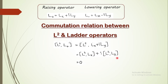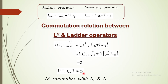So both terms are equal to zero, and finally we can say L² and L+ commute. In the same manner, if we consider the lowering operator L− and solve, we get the same answer — zero — because only the minus sign changes. So the conclusion is that the square of the angular momentum commutes with both L+ and L−, meaning L² and the raising or lowering operator can be measured simultaneously.